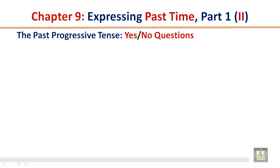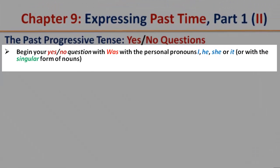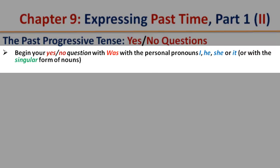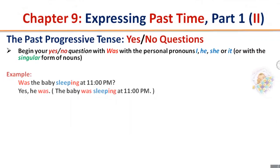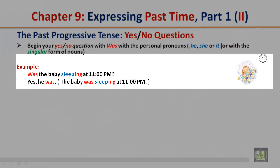The Past Progressive Tense — Yes or No Questions. Begin your yes or no question with 'was' with the personal pronouns I, he, she, or it, or with the singular form of nouns. Was the baby sleeping at 11 p.m.? Yes, he was. The baby was sleeping at 11 p.m.